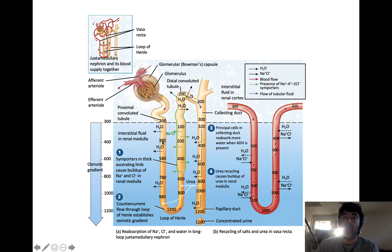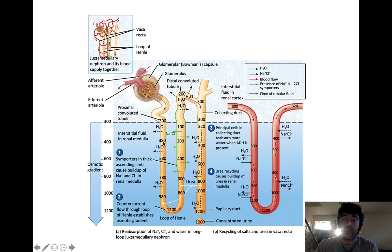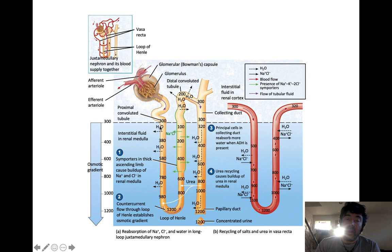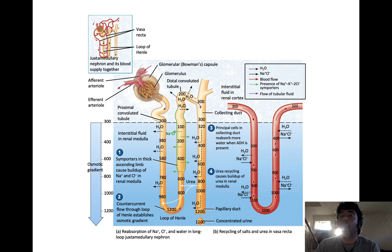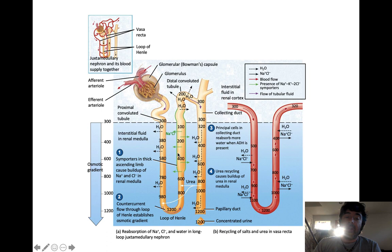As filtrate works its way through the nephron, it enters the descending loop of Henle. The descending loop of Henle reabsorbs water and only water. Because water is being removed from filtrate while solutes remain, there's a higher ratio of solute to water, and the concentration of filtrate in the descending loop of Henle gets progressively more concentrated. The loop of Henle is essentially an adaptation to life on land — the longer the loop of Henle, the more water you can reabsorb.